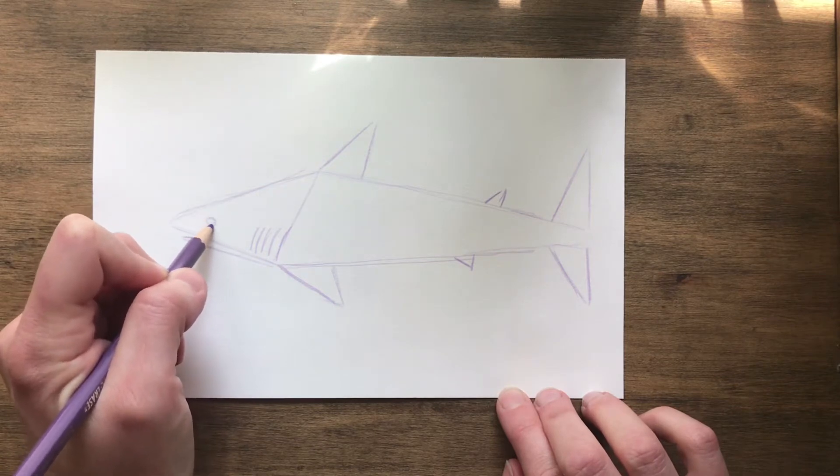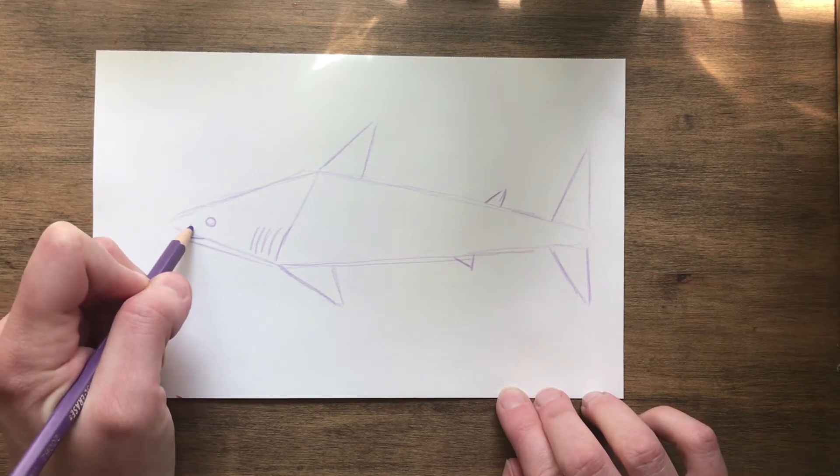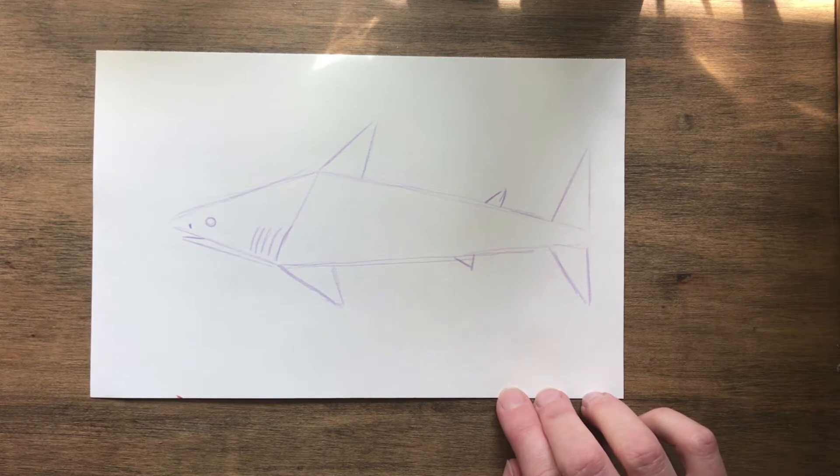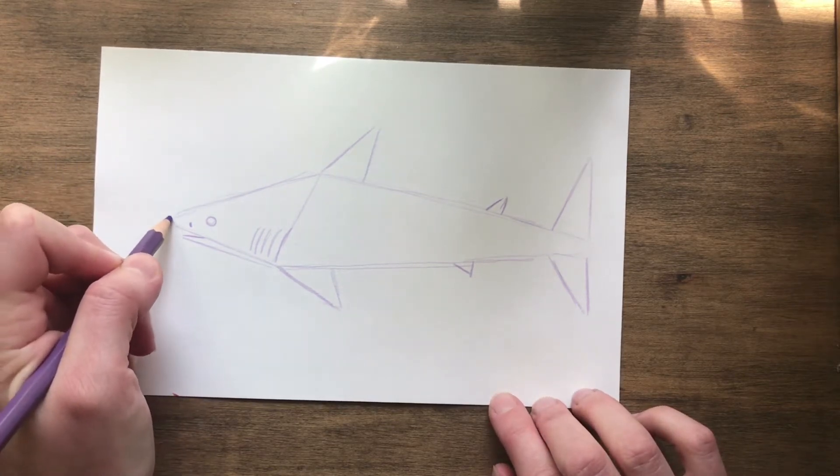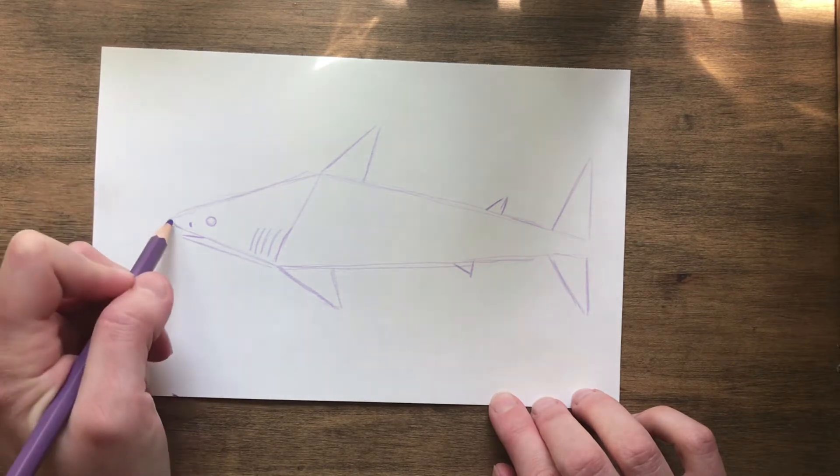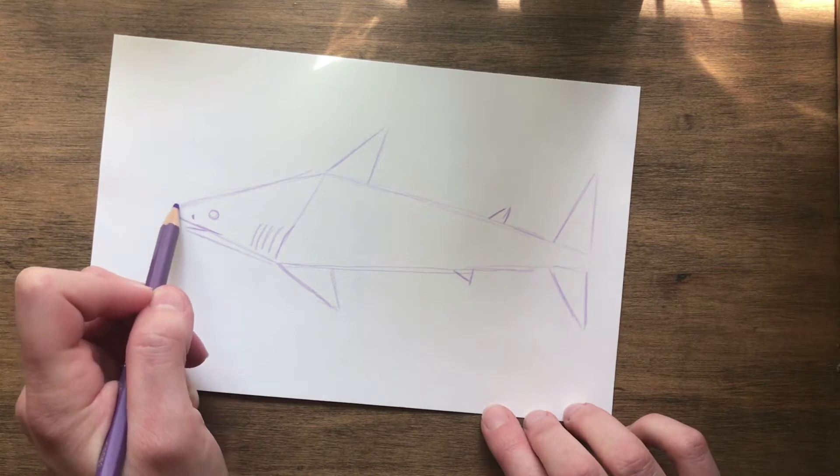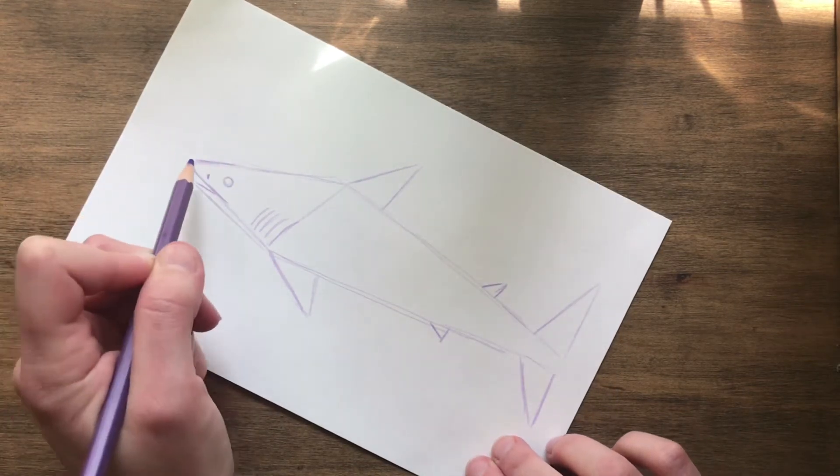Now about here you are going to draw a circle for the eye. And then a little nostril. Why do sharks have nostrils anyways because they don't breathe underwater. Well with a nose they breathe through their gills. But I don't know if they use their nostril for breathing. If you know tell me in the comments because I would like to know.